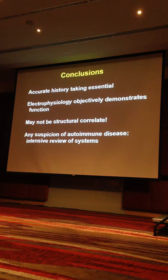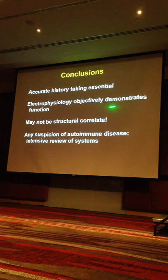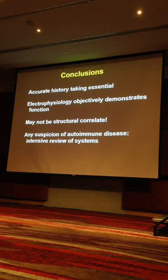What I've tried to demonstrate in this short time is the way we can use electrophysiology objectively to look at retinal function. We can separate the function of the rod and cone systems, and separate photoreceptor disease from inner retinal disease. Accurate history taking is absolutely essential — you need to ask specific questions about medications and operations. We can objectively demonstrate function even when there is no structural correlate; just because someone images normally doesn't mean they function normally. Any suspicion of autoimmune or paraneoplastic disease requires a full intensive review of systems, PET scans, and referral to internists.